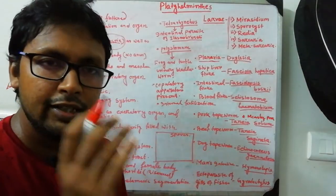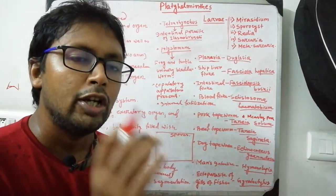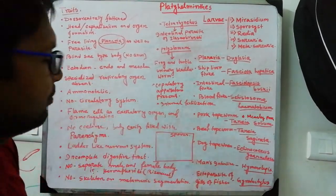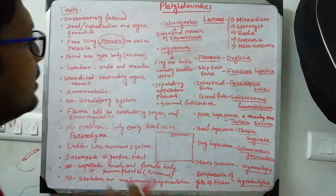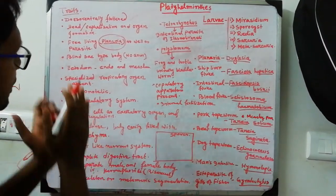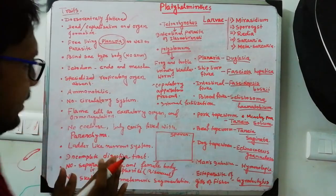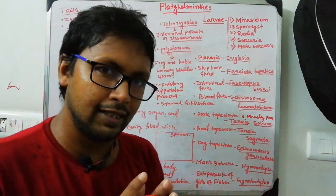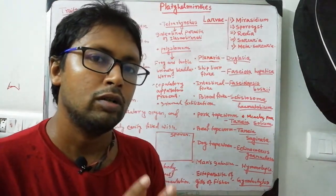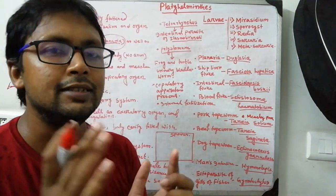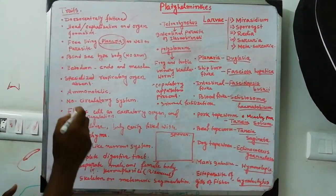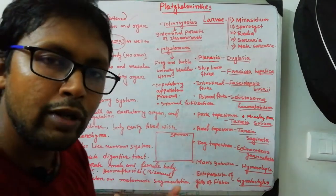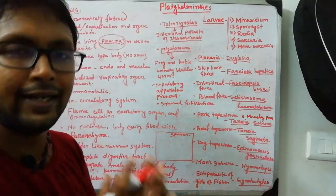In case of Porifera, it is not a blind sac type body cavity because so many pores are there in their body. But in case of Cnidarians as well as Platyhelminthes, the blind sac type body structure is present - only mouth, no anus. They are triploblastic: ectoderm, endoderm, and mesoderm - whereas the previous phyla were diploblastic. However, no coelom is present; mesoderm between ectoderm and endoderm is parenchymatous.